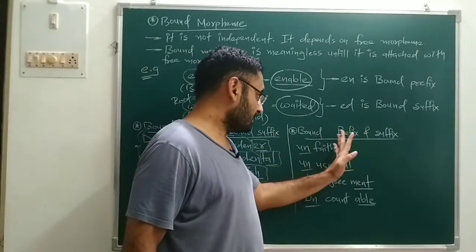For example, take the word 'enable'. Divide it into 'en' plus 'able'. 'Able' has its own meaning and doesn't require any other word — so 'able' is a free morpheme. Now 'en' alone means nothing — it is meaningless. Only when 'en' is attached to the free morpheme 'able' can you say 'enable' and find its meaning. So 'en' is a bound morpheme.